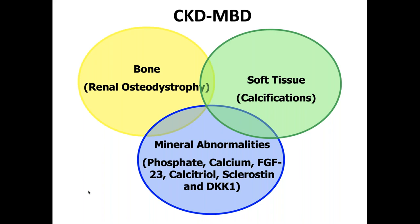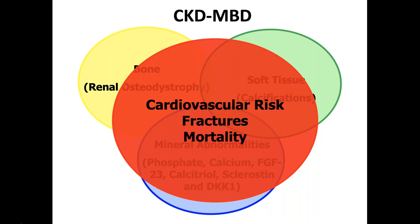CKD metabolic bone disorder involves bone — with renal osteodystrophy — but also soft tissue calcifications and mineral abnormalities involving phosphate, calcium, FGF23, calcitriol, sclerostin, and DKK1. All of these combine in CKD stage 4 to 5, contributing to increased cardiovascular risk, increased fracture risk, and increased mortality risk.